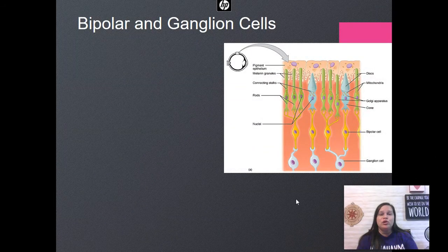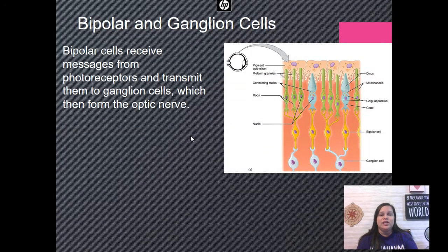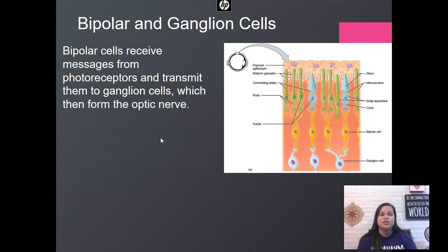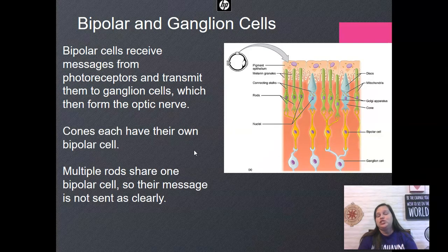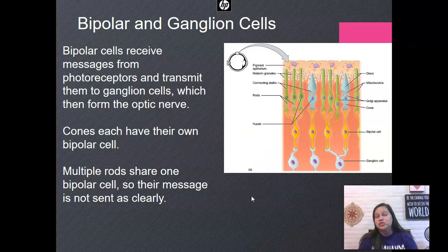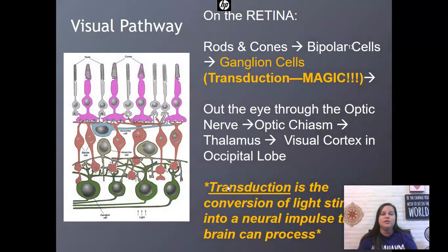The bipolar cells continue the message from the rods and cones and transmit them to the ganglion cells. The ganglion cells then go on to form the optic nerve. As mentioned, the cones each have their own bipolar cell and the rods have to share one, so their message is not going to be sent as clearly.